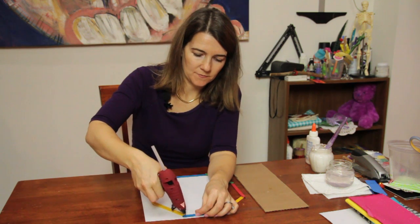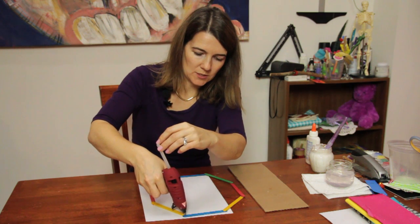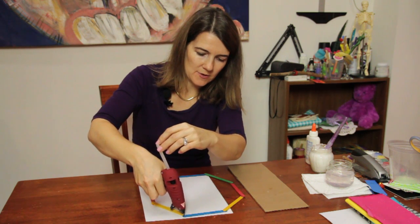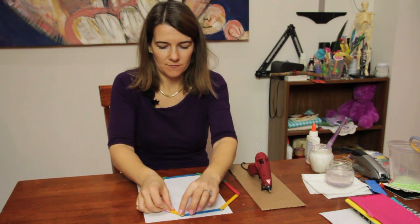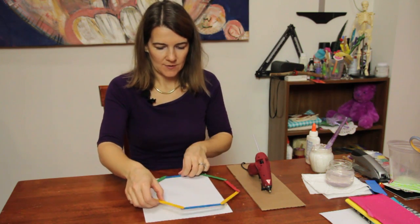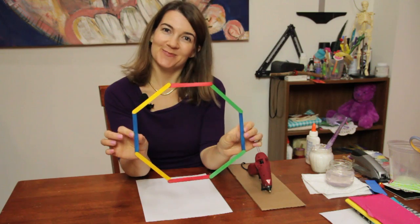Come on glue gun, just a little bit more. Let's push this in, there we go. A little bit more from the glue gun, and we have the shape of an octagon with popsicle sticks. Enjoy.